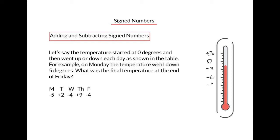On Monday, we started at 0 and went down 5 degrees, so we start at 0 on our scale and move down 5 places. The temperature at the end of Monday was negative 5 degrees. On Tuesday, the temperature went up 2 degrees, so we start at negative 5 and go up 2 degrees. At the end of Tuesday, the temperature was minus 3 degrees.